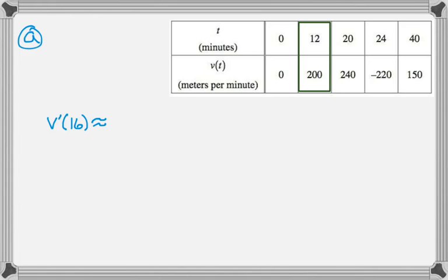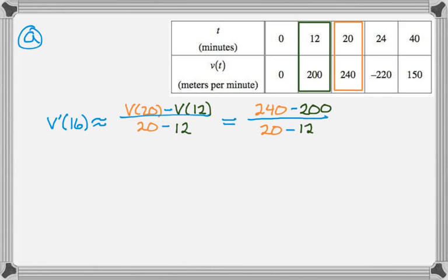So, I'm going to use this box, 12, 200, and this box, 20, 240. So, I'm going to do V of 20 minus V of 12 over 20 minus 12, and then fill in the values. So, 240 minus 200, like that.